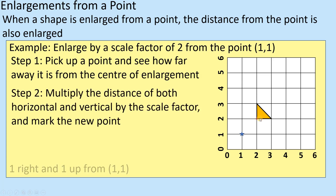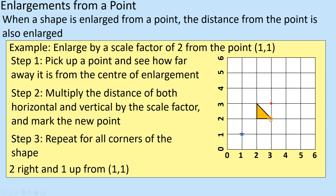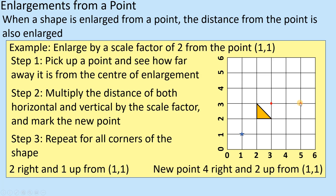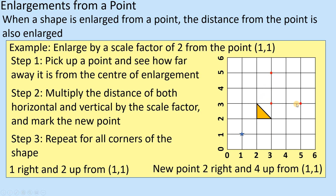Take this first point — it's currently one right and one up from the centre. That needs to change to two right and two up, so it moves to there. The next point is currently two right and one up, so doubling that gives four right and two up — it moves to there. The final point is currently one right and two up, so it needs to be two right and four up, moving to there. So all three points have been mapped.